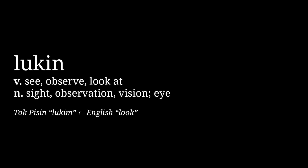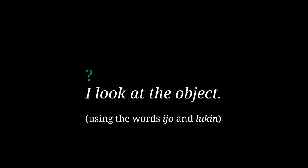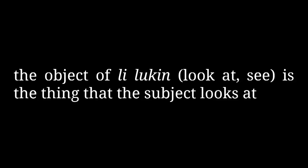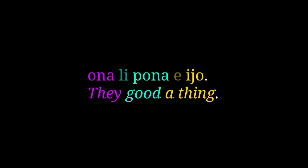Take a verb like 'lukin,' which means 'look at' or 'see.' How do you think you'd say something like 'I look at the object' or 'I see something?' That's right, it's 'mi lukin e ijo.' There's one other very important thing with how to use e. For some verbs, like lukin, it's pretty intuitive what the object of the verb would be—it's the thing that the subject sees. However, for a lot of verbs, it's not as clear. For example, 'pona,' which as a verb means 'be good,' doesn't really make sense as something you could use with an object. However, a sentence like 'ona li pona e ijo' is still perfectly valid in Toki Pona—it's just using pona in a different way from its 'be good' meaning.